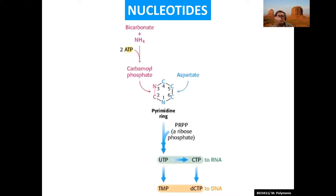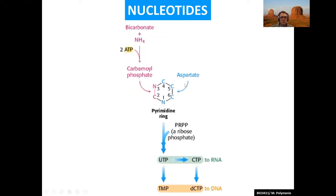Let's start with pyrimidine synthesis, which is simpler. That's the pyrimidine ring, and these three carbons are from nitrogen, and aspartate molecules. Aspartate amino acid, which we have already discussed, is an input for pyrimidine synthesis. We've also seen it in the urea cycle, so it's a precursor for quite a few things.